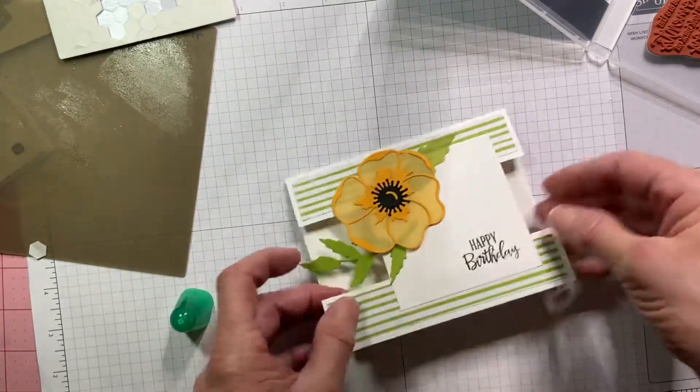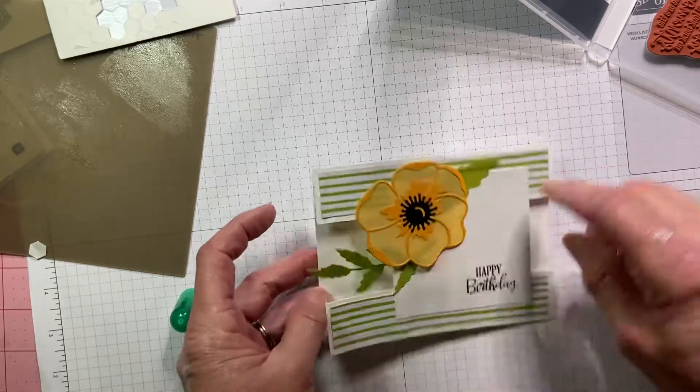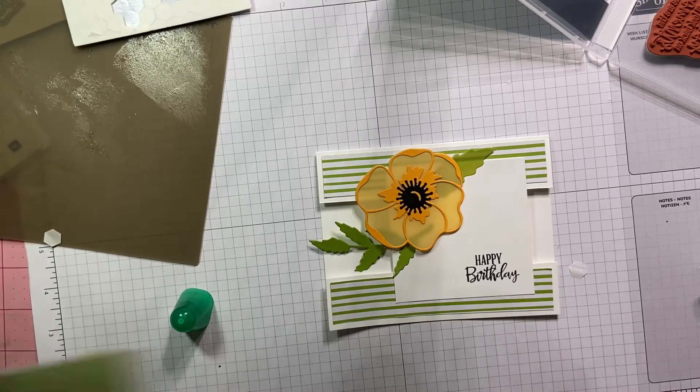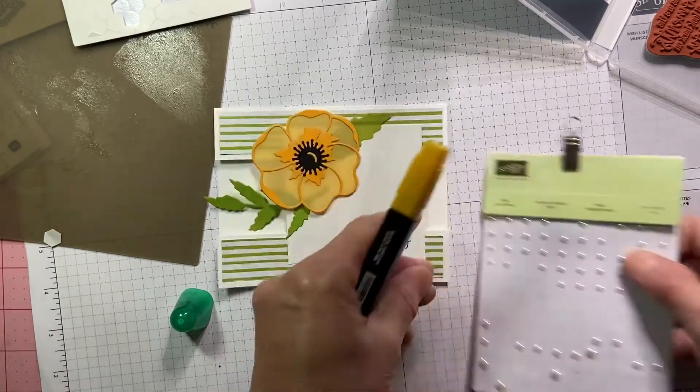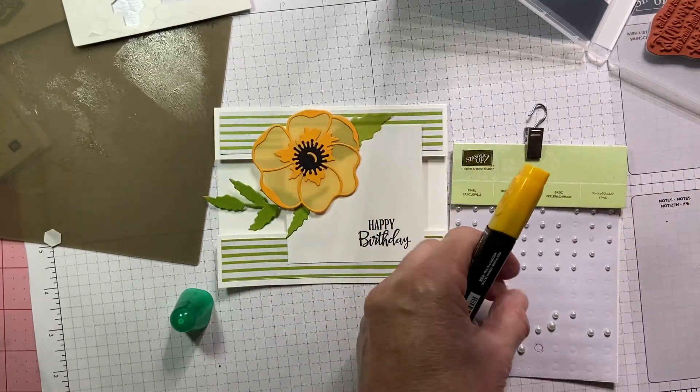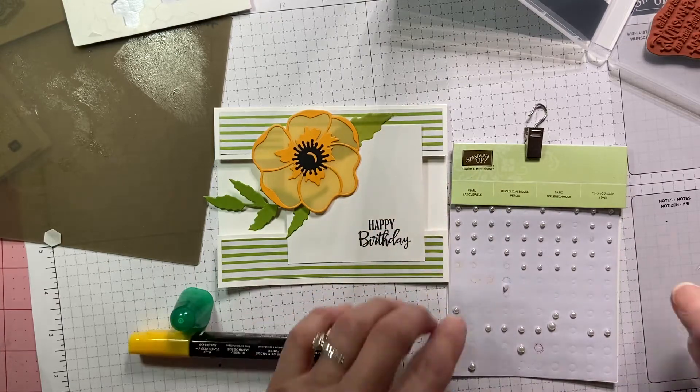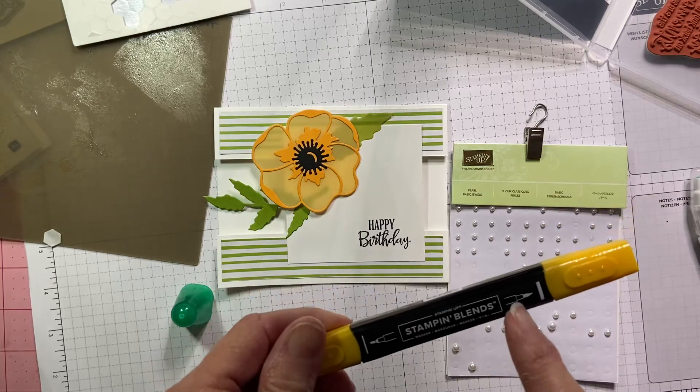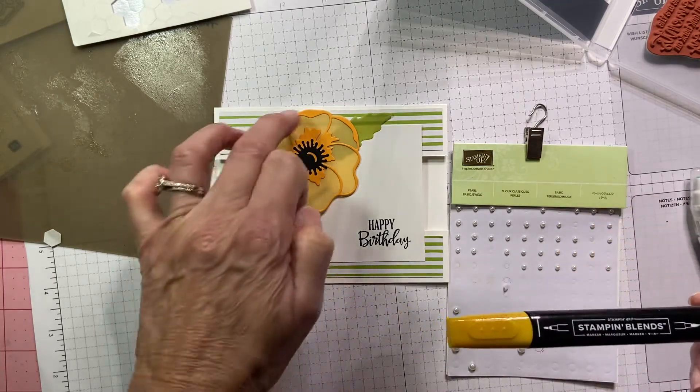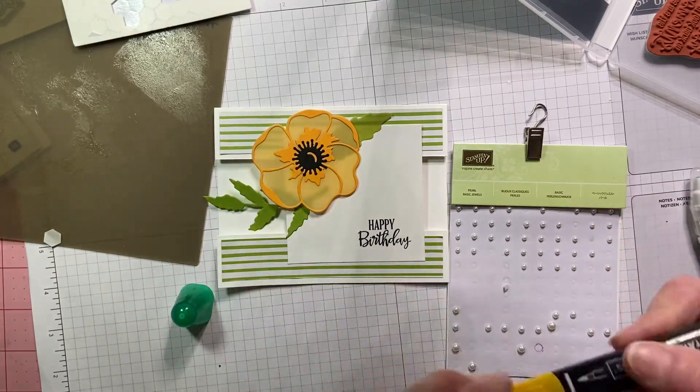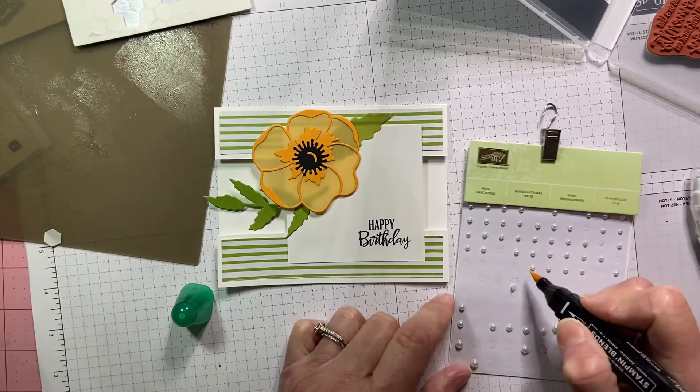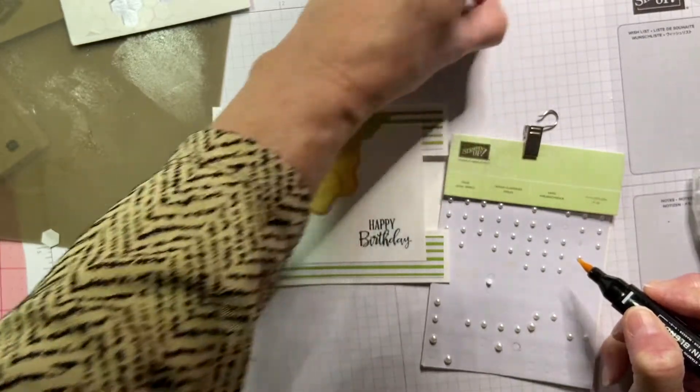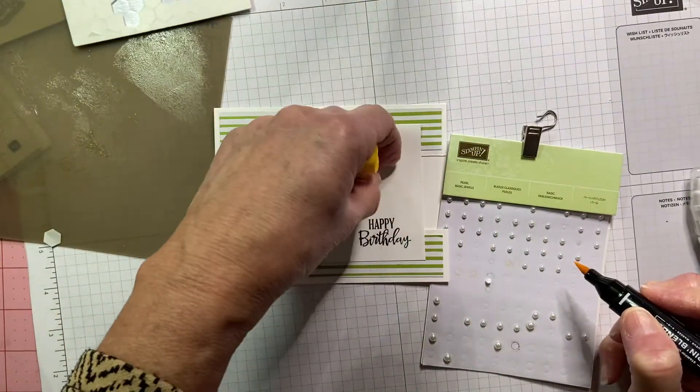It needs a little something more. So I'm going to take our Stampin' Up pearl embellishments. I'm going to take, what I'm first going to do is I have our Stampin' blends. This is the color Mango Melody to match the outline of the flower. I'm going to take the brush tip and paint the pearl. Where'd you go, you little sucker? It's over here. Paint the pearl. Let it stick to my finger, with the Mango Melody. So we have a nice color coordinating.